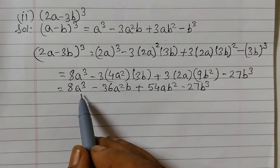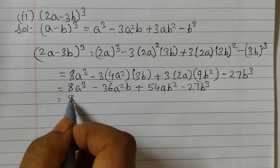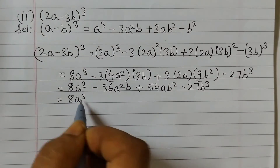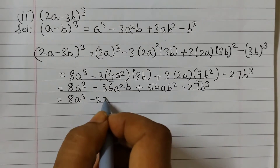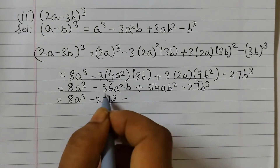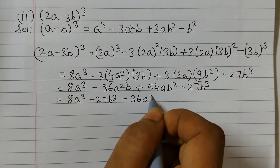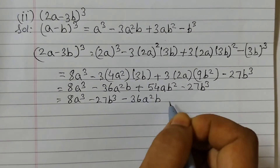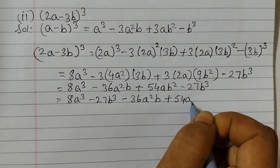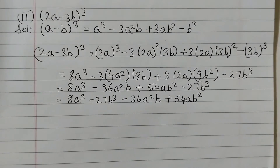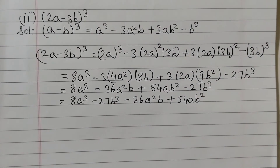Rearrange the terms — write the cube terms first: 8a³ − 27b³ − 36a²b + 54ab². That's our final answer.